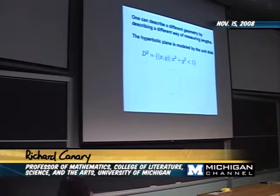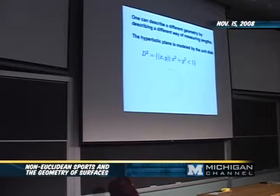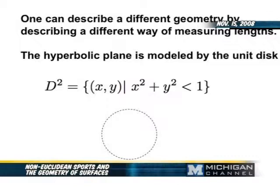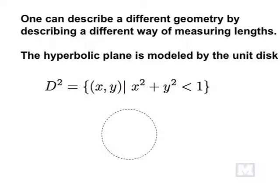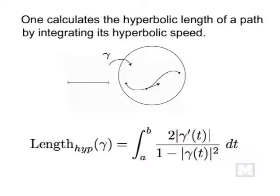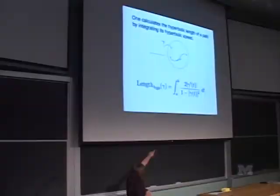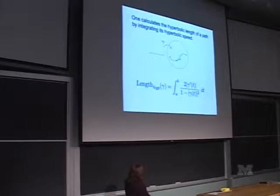What I want to talk about is non-Euclidean or hyperbolic geometry. It's going to live in the unit disk — the set of points inside a ball of radius one. But I'm going to give you a different formula for finding the length of a path. Once you have a different formula, you have a different distance because you look at the length of the shortest path using this new formula. Instead of integrating the Euclidean speed, you integrate the hyperbolic speed.